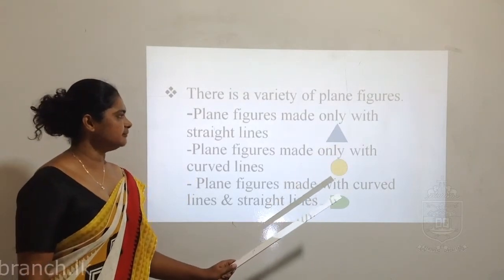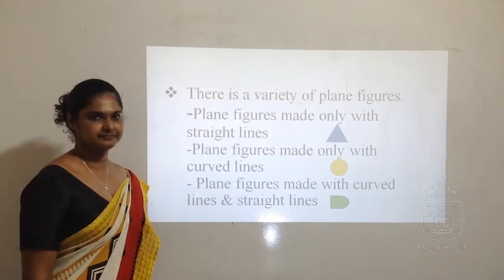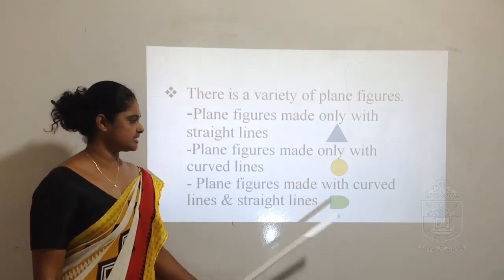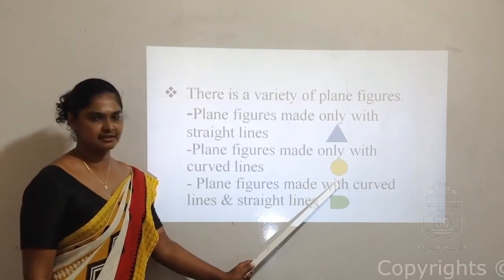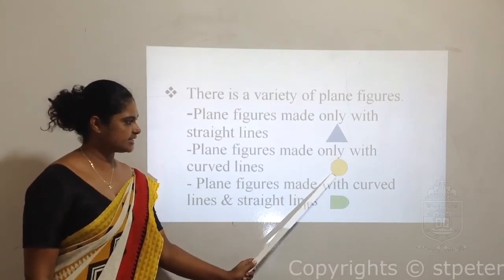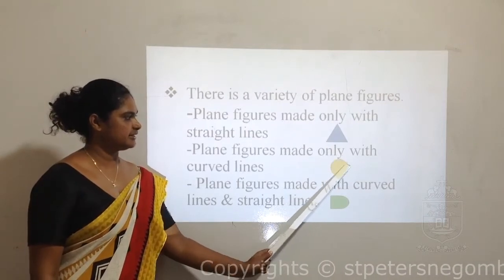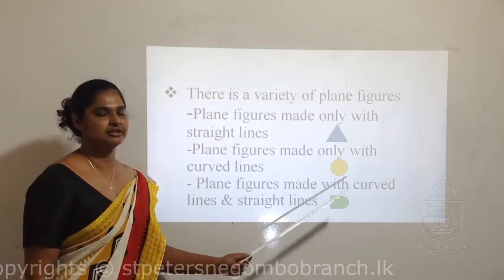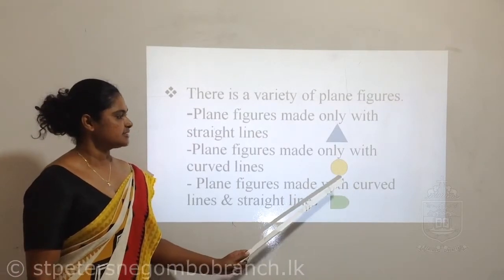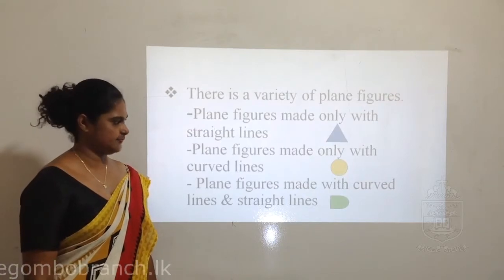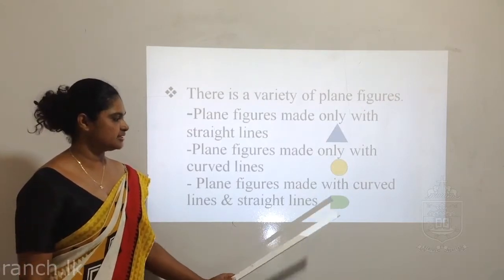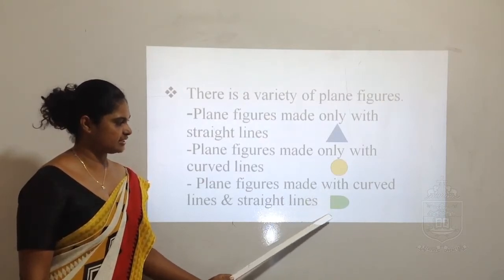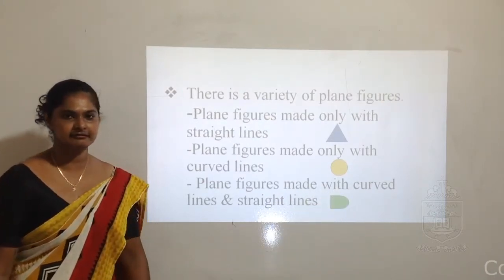Triangle is a closed plane figure. And look at this children - this is a circle. This is a closed plane figure. Closed means it is nicely closed - it is enveloped nicely. The circle is made only with curved lines. This other special figure is made with a straight line as well as a curved line.